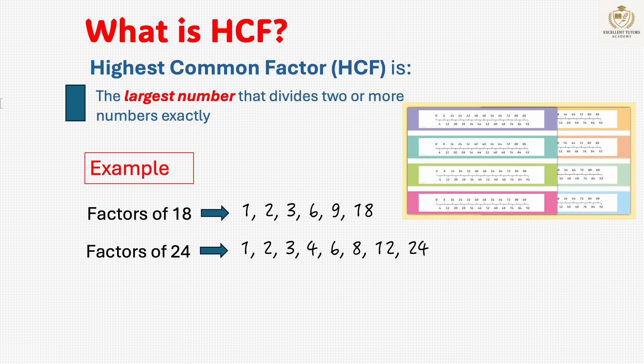The factors of 24 are 1, 2, 3, 4, 6, 8, 12 and 24. The largest number that appears in both lists is 6. So the HCF of 18 and 24 is 6.